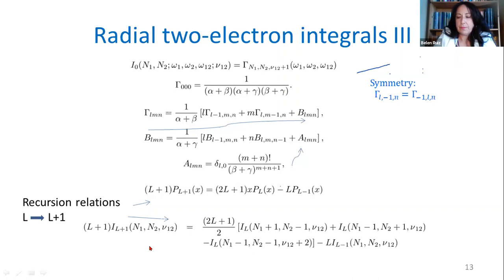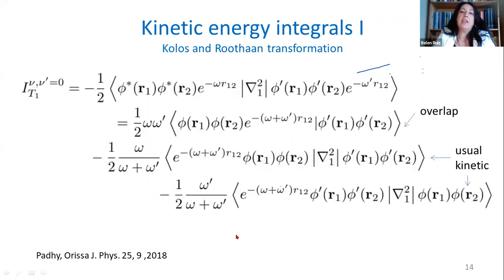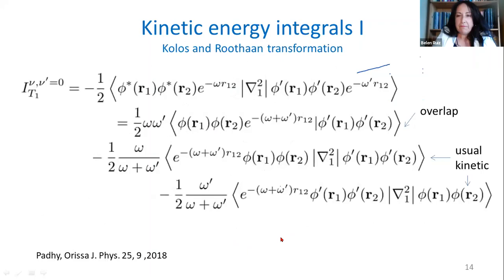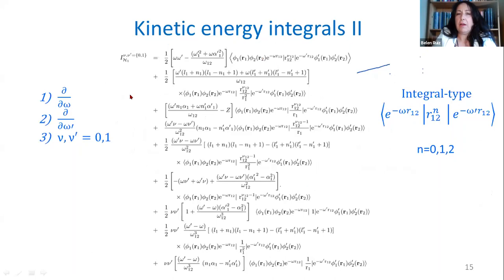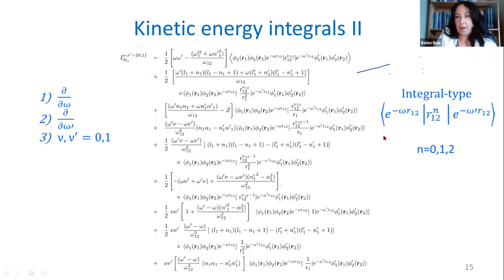We also calculate kinetic energy integrals. As in the Hylleraas CI method, we use the Colon and Rutan transformation, achieved by our collaborator Padhi. It is tricky because one exploits properties of the Laplacian and Nabla operators and the turnover rule, but it is possible to express the kinetic energy integrals as standard kinetic energy integrals in the CI method. For the case with powers nu and nu' equal to one, one obtains the correct expression by differentiation with respect to omega and omega prime — this looks complicated but is simply a linear combination of usual repulsion and overlap integrals.